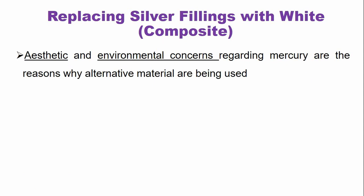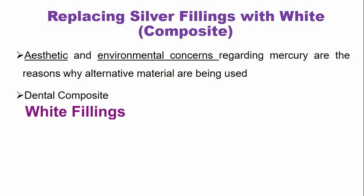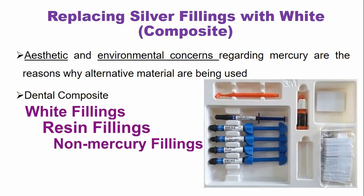The aesthetic and environmental concerns regarding mercury are the reasons why alternative materials are being used. The most common material used instead of silver fillings are the dental composites. Dental composites are also known as white fillings, resin fillings, or non-mercury fillings.